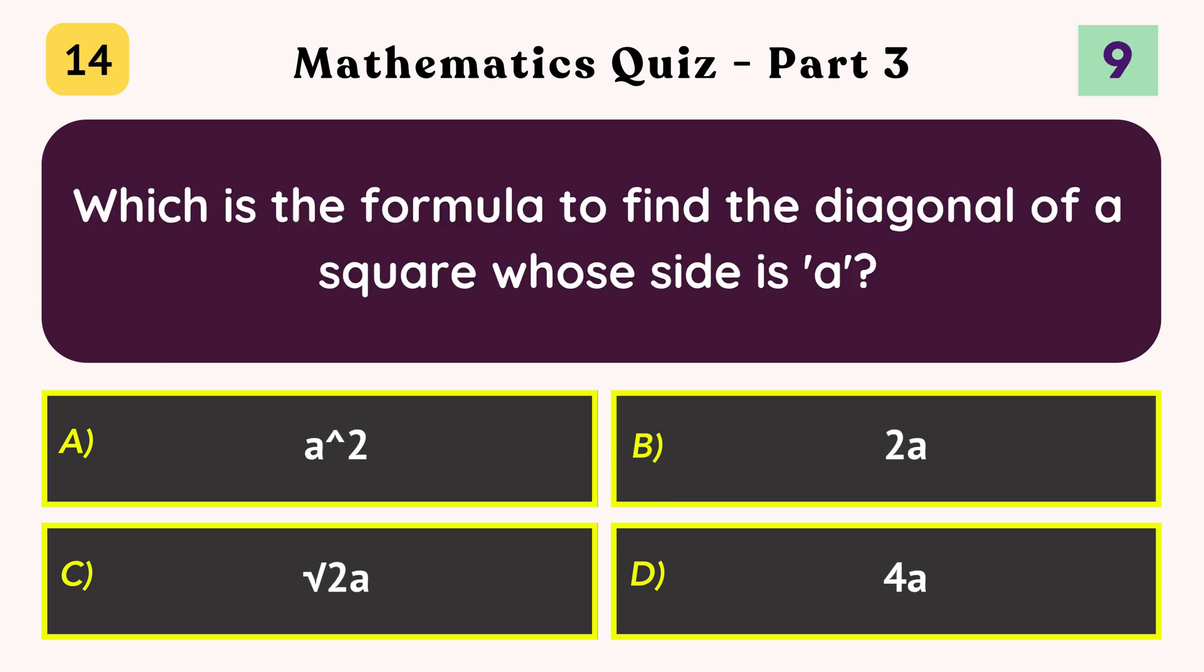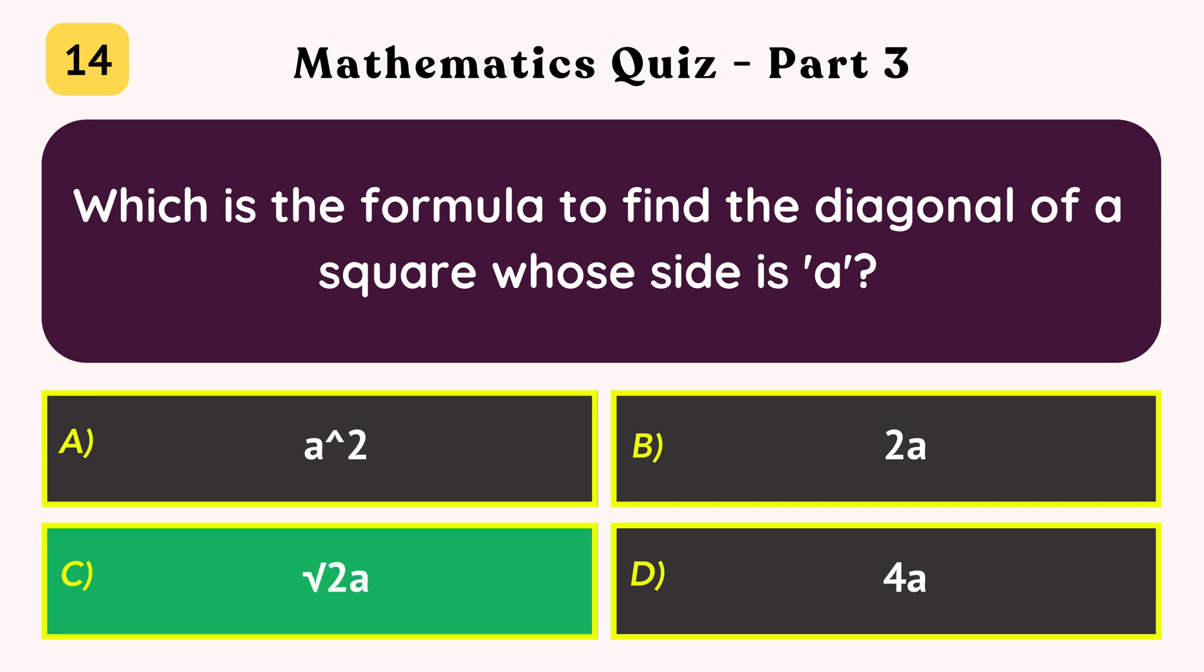Which is the formula to find the diagonal of a square whose side is a? Square root 2a.